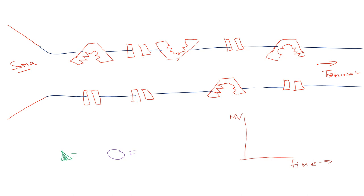Now we're going to zoom way into the neuron at a subcellular level. In this drawing, the green triangles represent sodium, which are cations — they have a positive charge. The purple will represent potassium. What is the charge of potassium? It's also a cation — both sodium and potassium have a positive charge of one.